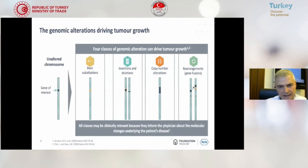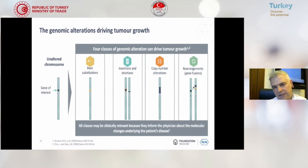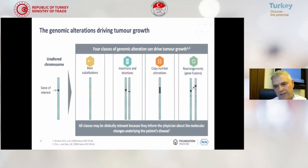How do we test all these mutations? We have different types of mutations, so we have to test for all of them. For example, one is base substitution, another is insertion and deletion mutations, one is copy number alterations, and another is rearrangement or gene fusions.